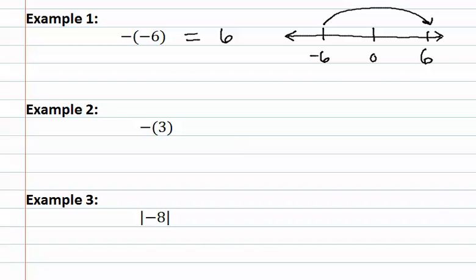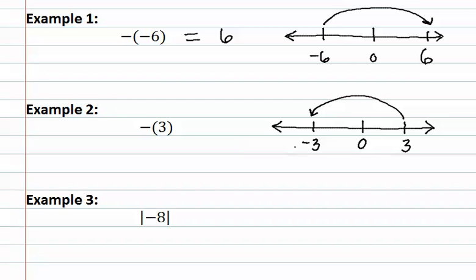In example two, they want to know the opposite of positive three. A number line may help us determine the answer. When we see that three is located on the number line and find its opposite or reflection across zero, we find its reflection at negative three. Therefore, if we have a negative sign in front of parentheses containing a positive number, it is asking us for negative three.